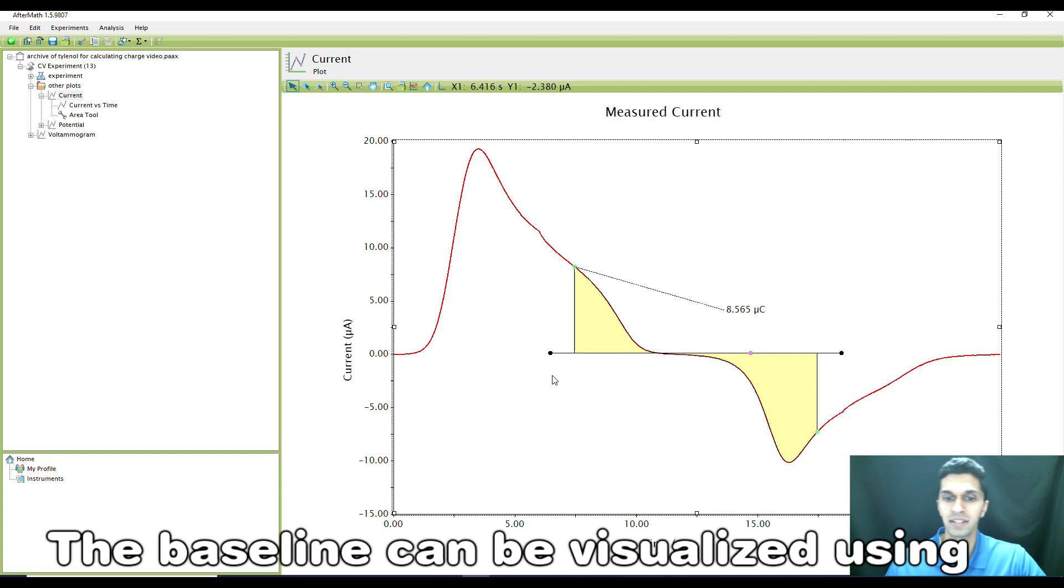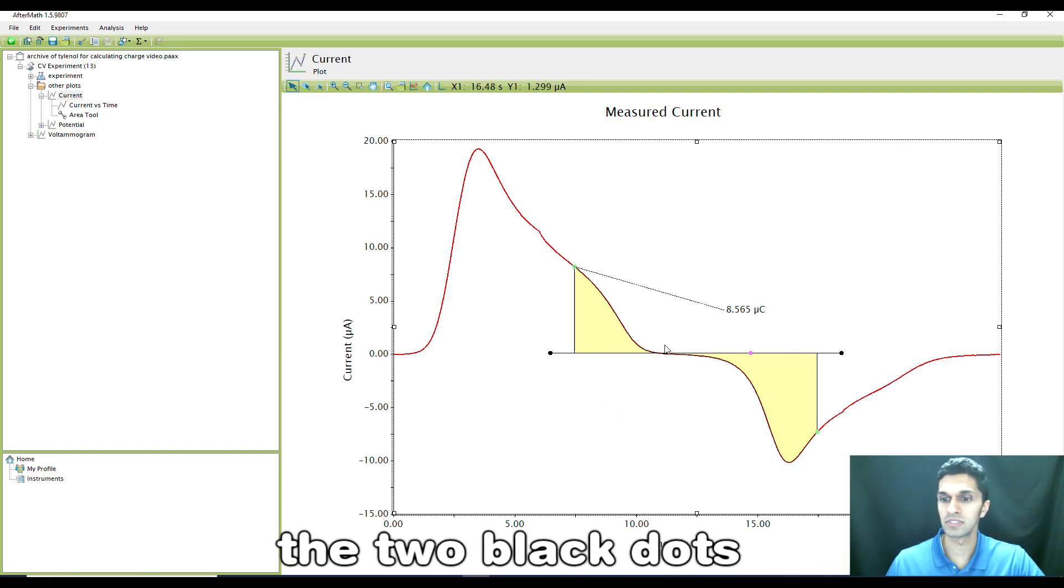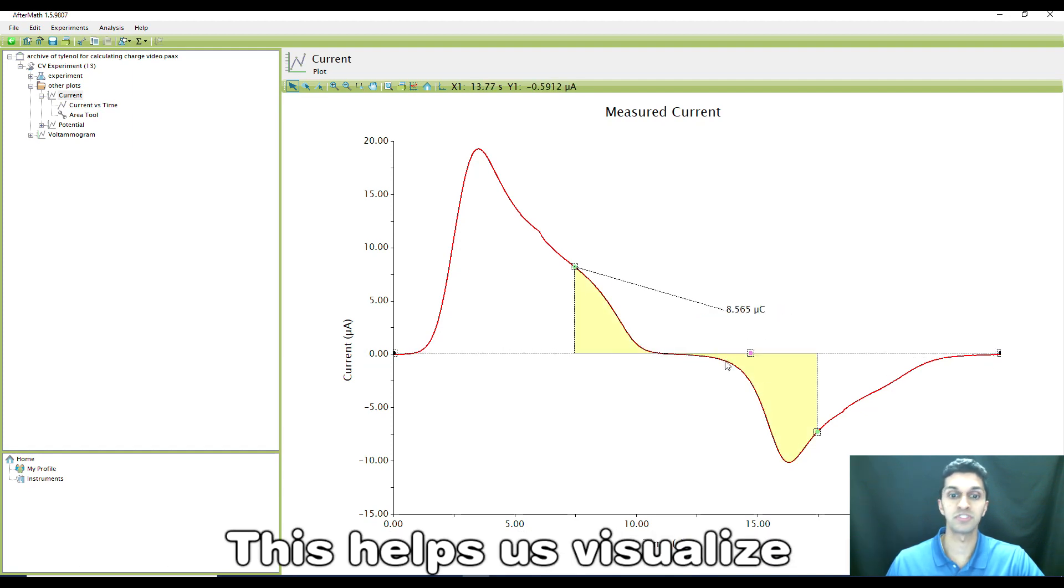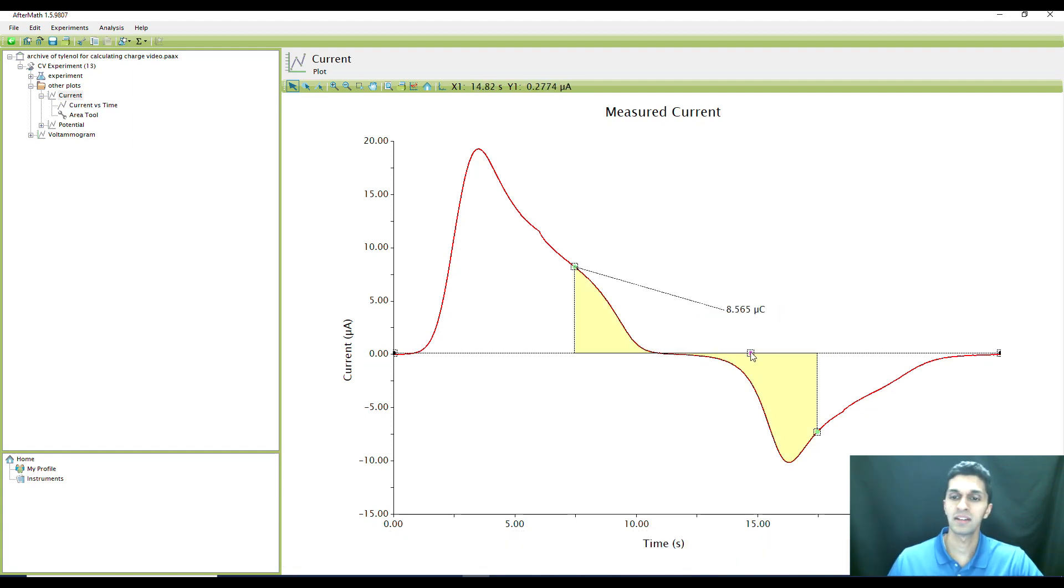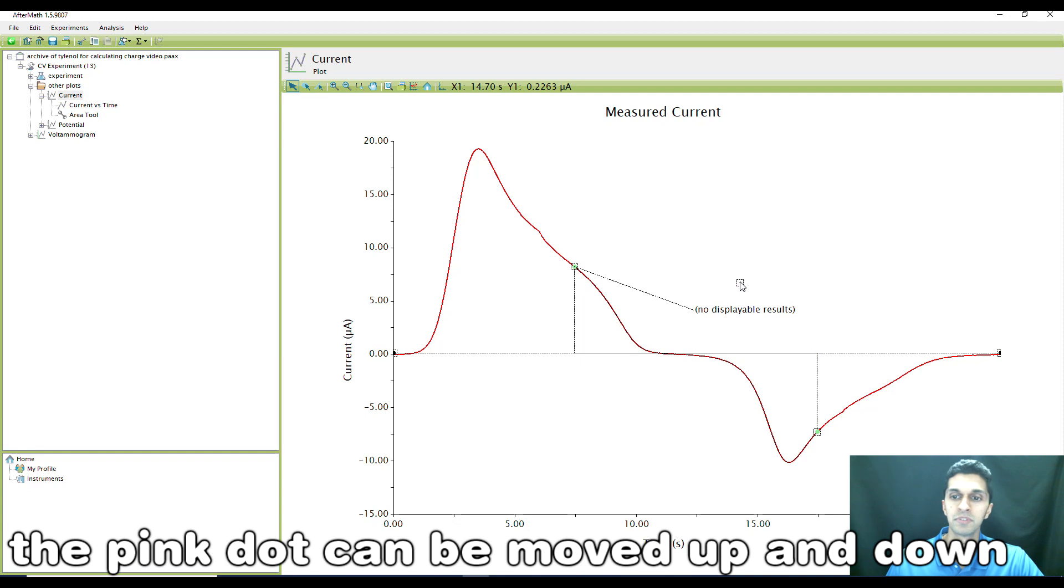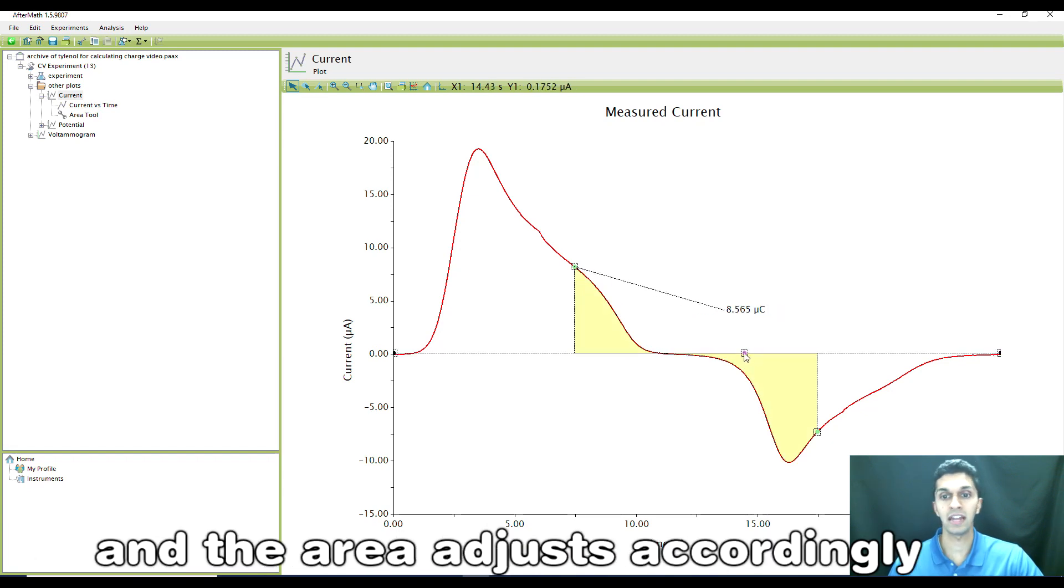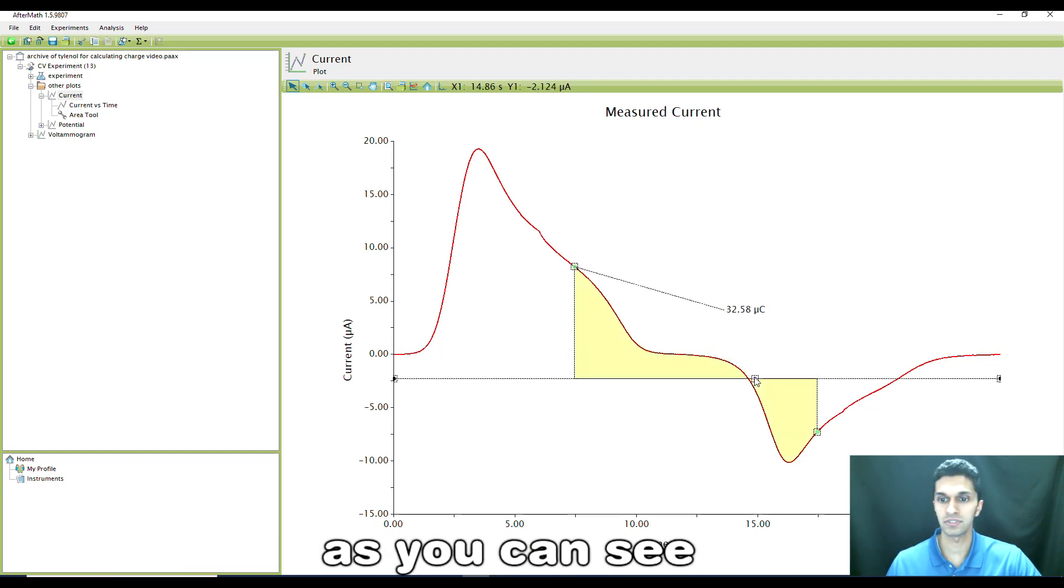The baseline can be visualized using the two black dots. We can extend the black dots out and that helps us visualize where the baseline is. The pink dot can be moved up and down, adjusting where the baseline is along the y-axis and the area adjusts accordingly.